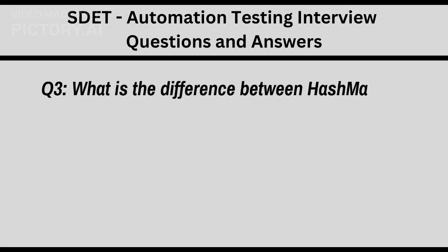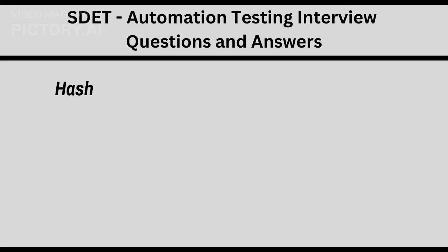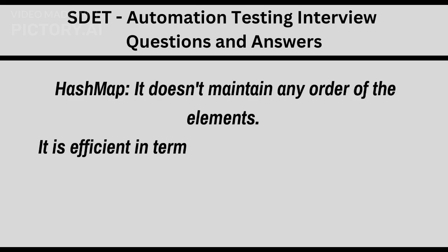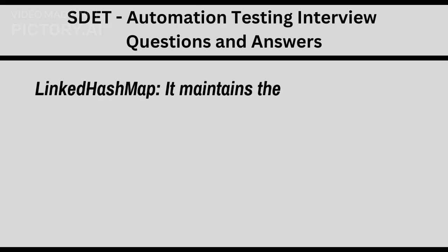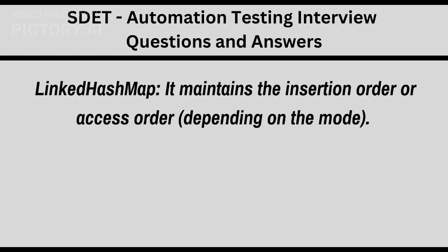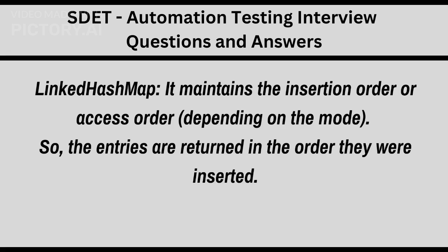Q3: What is the difference between HashMap and LinkedHashMap in Java? HashMap doesn't maintain any order of the elements; it is efficient in terms of insertion and retrieval but does not guarantee any specific order. LinkedHashMap maintains the insertion order or access order depending on the mode, so the entries are returned in the order they were inserted.